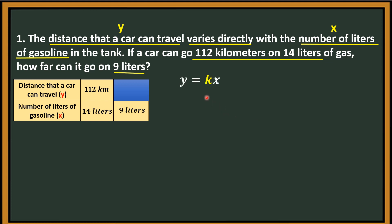So that is: Y is equal to K times X, where K is the constant. Let us use the first column — that is 112 and 14. So for Y, that is 112, and for X, that is 14. By substitution: Y is equal to K times X, so 112 is equal to K times 14.